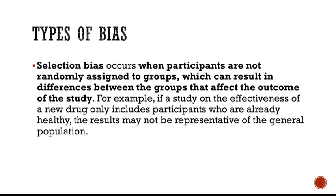There are different types of biases. The first is selection bias, which occurs when participants are not randomly assigned to groups, resulting in differences between groups that affect the outcome of the study. That's why we have to randomize. I gave you examples of how to randomize participants — we have draw lots, odd and even, spin the wheel, and more. We get all our sample first, randomize them, and make sure the control group and experimental group have the same characteristics. Everything must be equal to control our selection bias.